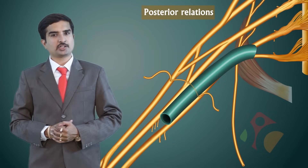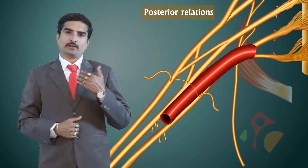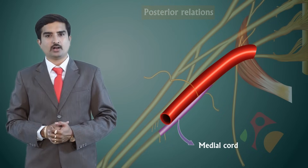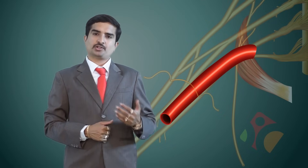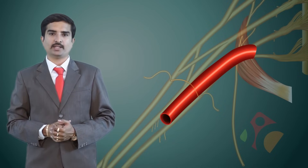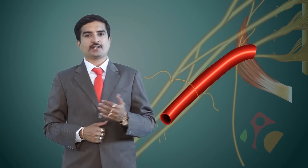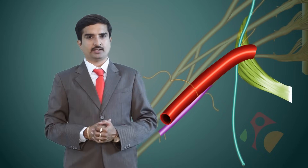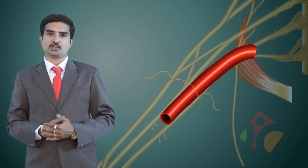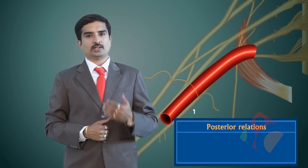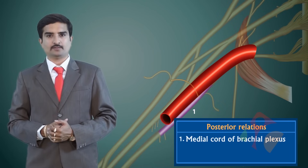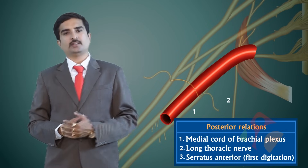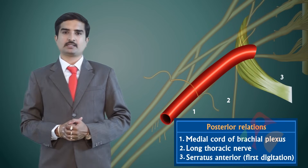The posterior relations of the first part of the axillary artery are three structures: the medial cord of the brachial plexus, the long thoracic nerve, and the first digitation of the serratus anterior muscle.